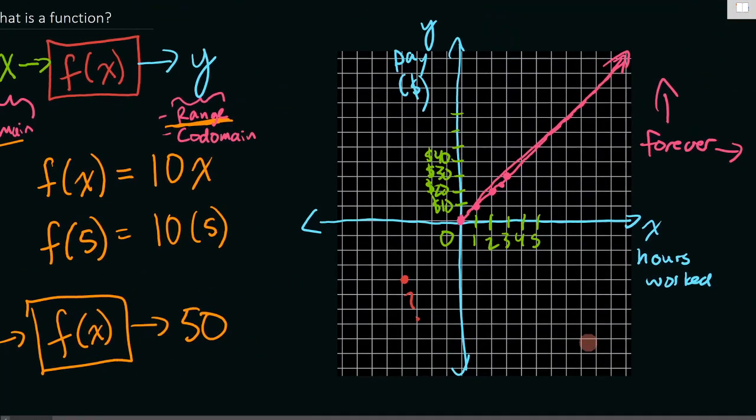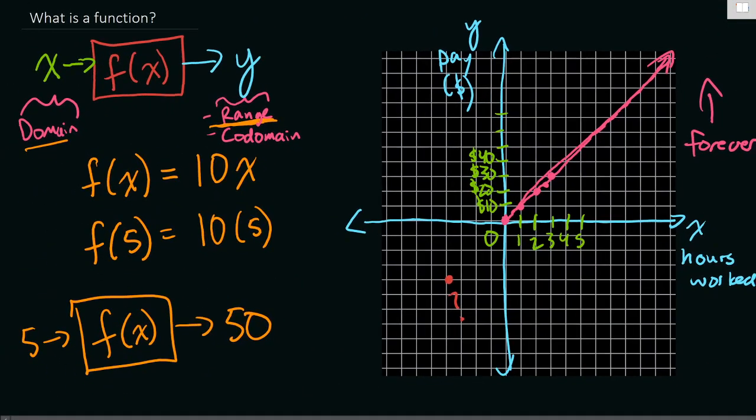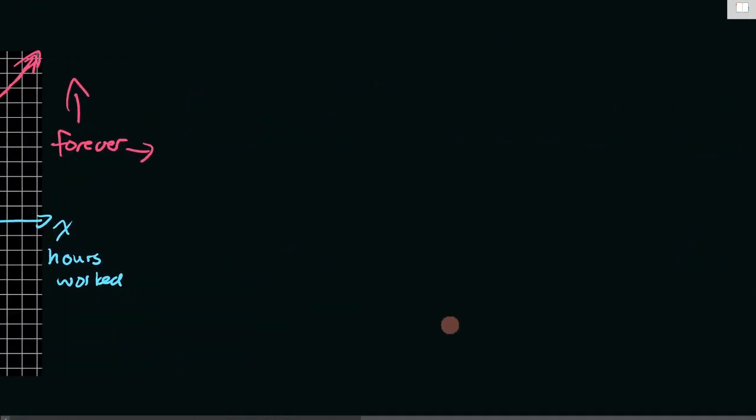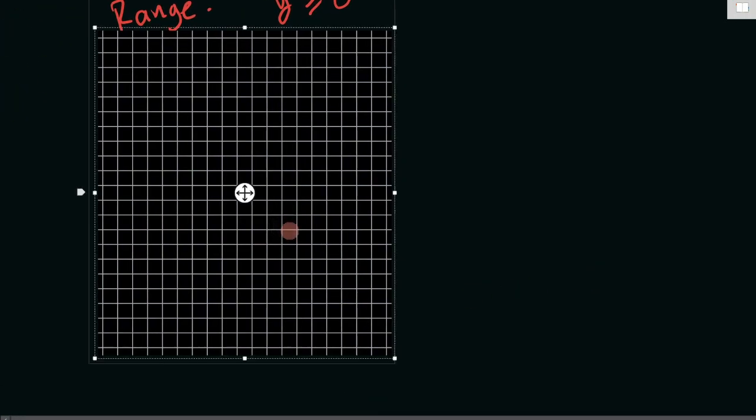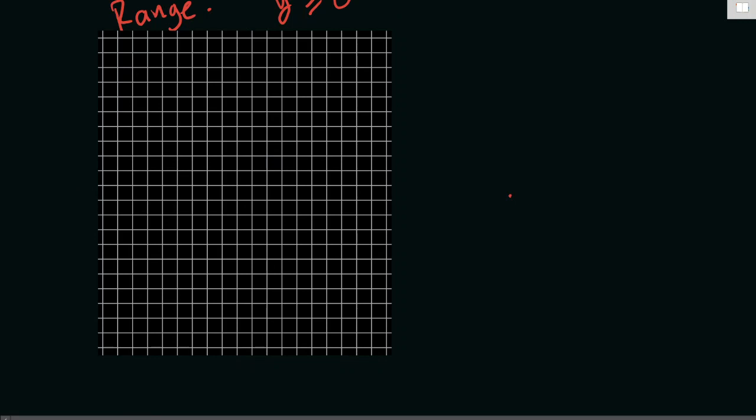Now, that's the idea of a sort of straightforward function. So let's give a non-example, what's something that's not a function. Okay, here we go. So like what happens if we have a graph of like a circle?